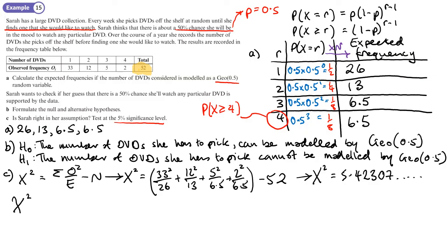Number of degrees of freedom, so we take away just one because we've not had to estimate P. So that's just a number of cells, which is 4, minus 1. So we're looking this up at 5% significance level, so we'll turn to the table. 3 degrees of freedom, 5%, and we end up with a critical value of 7.815.